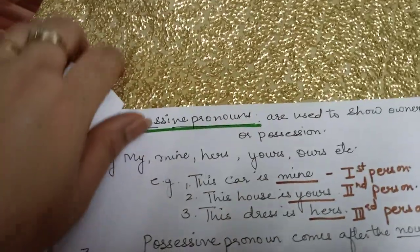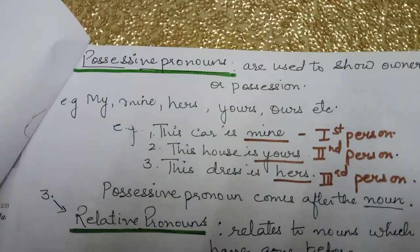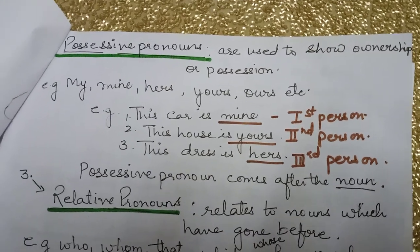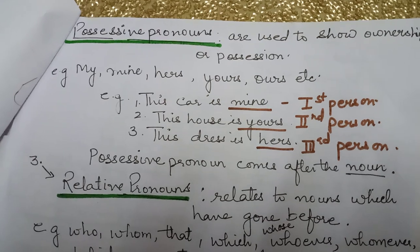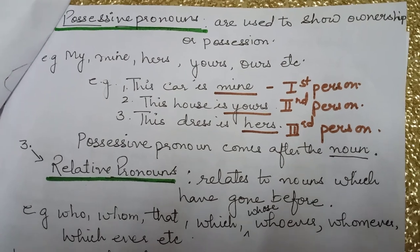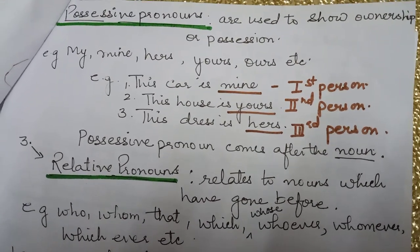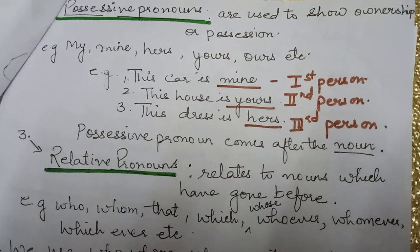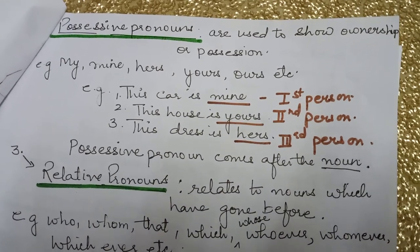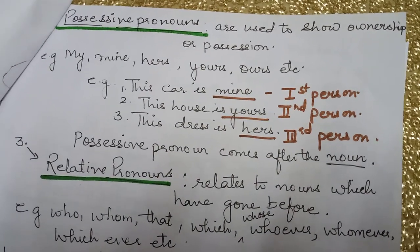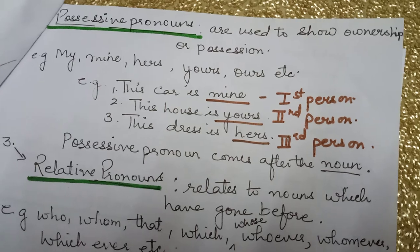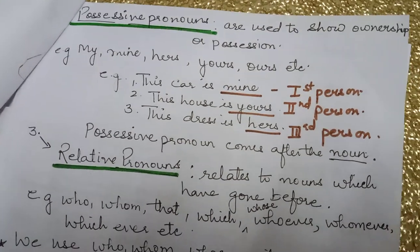Now, possessive pronouns. Possessive pronouns are used to show ownership, belongingness, or position. For example: my, mine, hers, yours, ours, etc. Examples: 'This car is mine. This house is yours. This dress is hers.' These pronouns show position or belongingness or ownership, so they are called possessive pronouns.